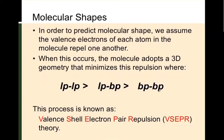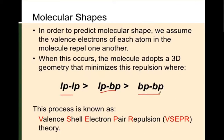We can work towards predicting molecular shapes based on electron repulsion. Electrons of the same spin repel each other because they have the same charge, so they don't like to be near each other. In order to predict molecular shape, we assume the valence electrons of each atom in the molecule repel one another. The molecule adopts a three-dimensional geometry that minimizes this repulsion, where lone pair–lone pair repulsion is greater than lone pair–bond pair repulsion.